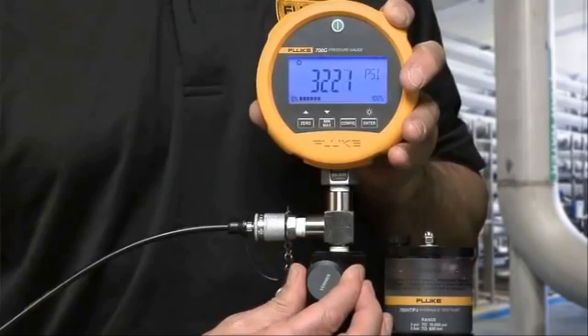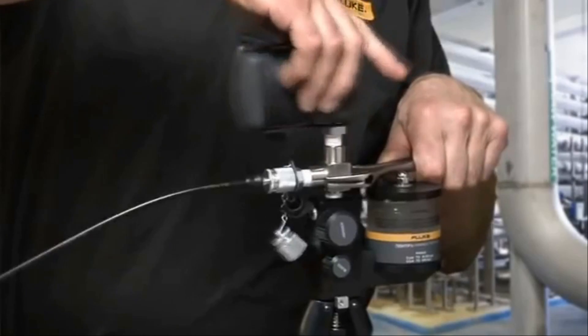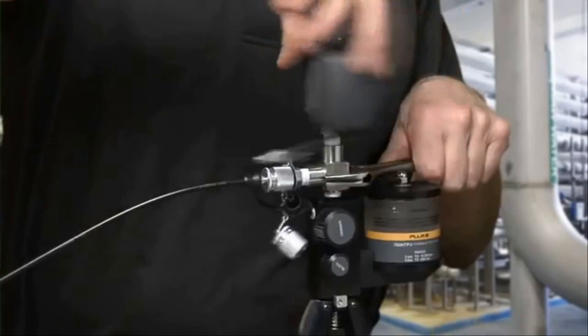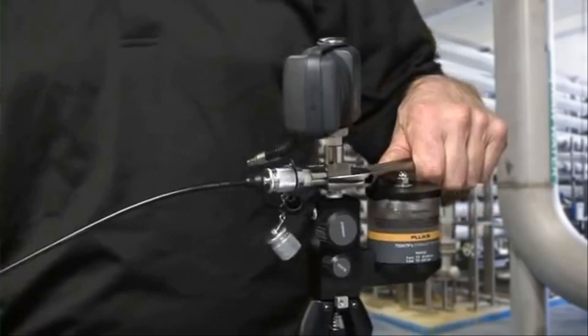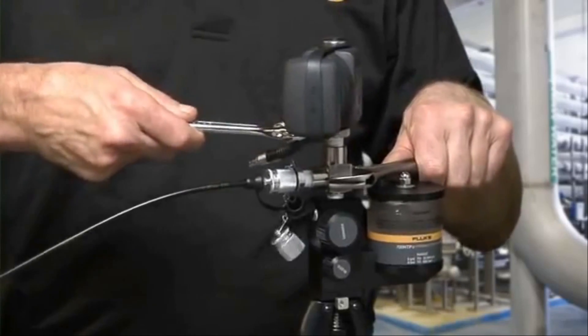Use the vernier adjuster to make fine adjustments. Connecting pressure modules to the hand pump is similar to connecting the gauges, but it is important to use two wrenches, one on the pump and one on the pressure module.